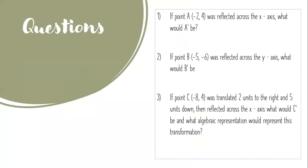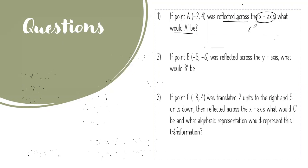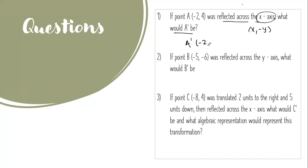Let's do the practice questions. First: if point A was at (-2, 4) and was reflected across the x-axis, what would A prime be? Write the rule first — reflecting across the x-axis means x stays the same, y changes signs. So A prime would be (-2, -4). X stayed the same at negative two, and positive four becomes negative four.